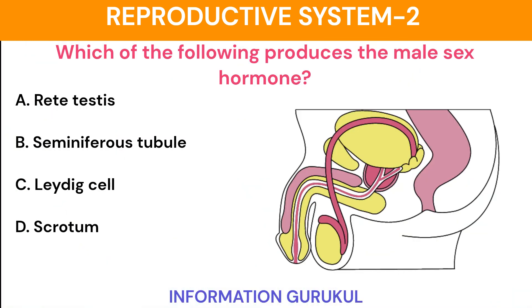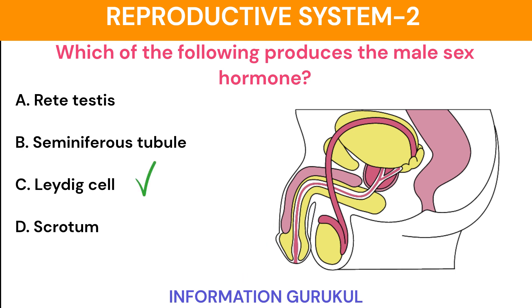Which of the following produces the male sex hormone? Leydig cells.